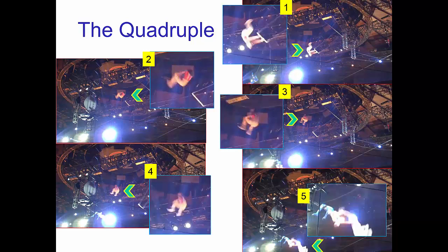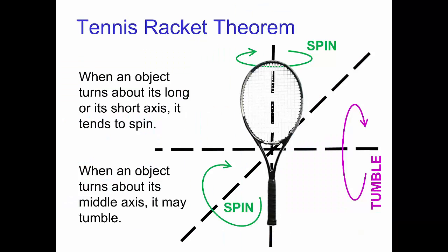Another important property about rotation is that it is not always stable. Sometimes an object spins, which is a stable rotation around an axis, but in some cases the rotation is unstable tumbling. The tennis racket theorem says that every object has two stable axes of spinning. Rotation around the third axis, which is perpendicular to these two, results in tumbling.